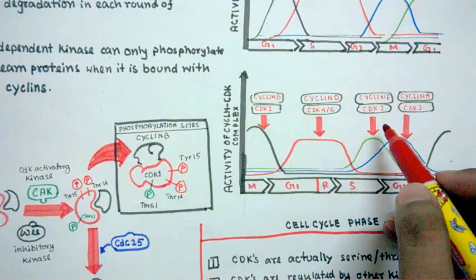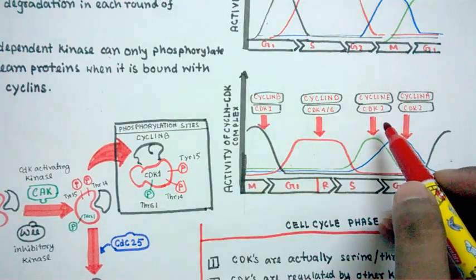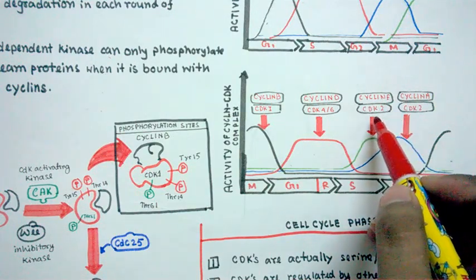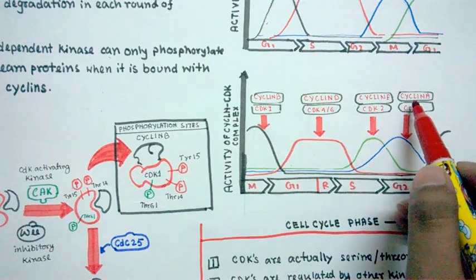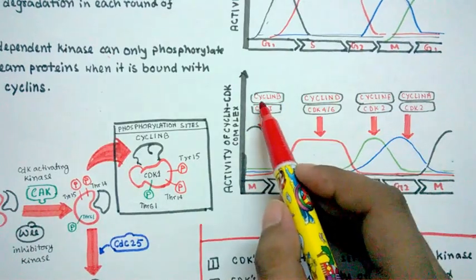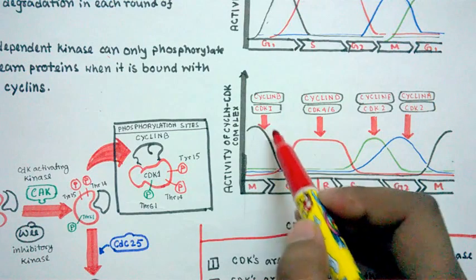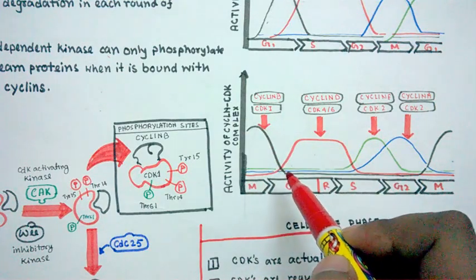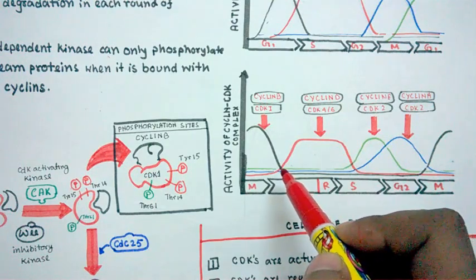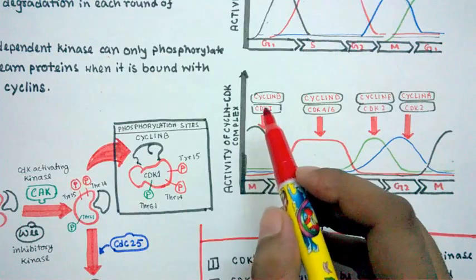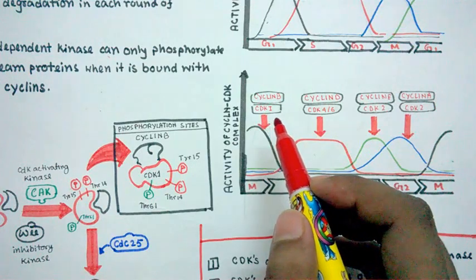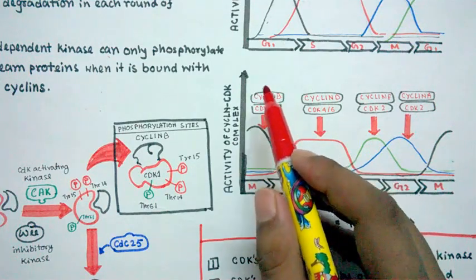For the S phase there are two cyclin-CDK complexes required: cyclin E with CDK2, and cyclin A with CDK2. For the M phase, the relevant cyclin is cyclin B paired with CDK1, which is activated during M phase and is responsible for the reactions occurring in the M phase of the cell cycle.